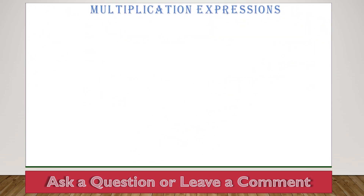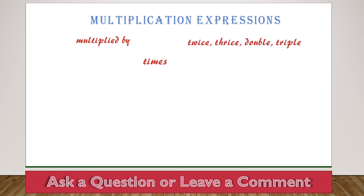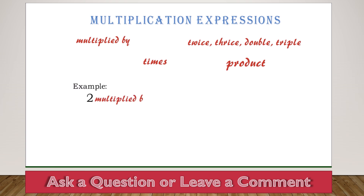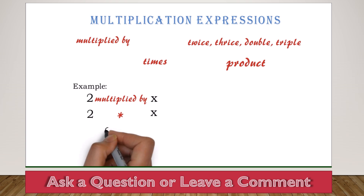Multiplication expressions. The following imply multiplication: 1. Multiply by. 2. Times. 3. Twice, thrice, double, triple, and so on. 4. Product. So if we have 2 multiplied by x, that will be 2 times x, which is simply 2x.